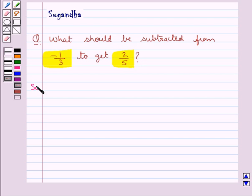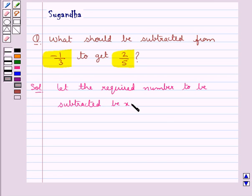Let's move on to the solution. Let the required number to be subtracted be x. So then we have -1/3 - x = 2/5.